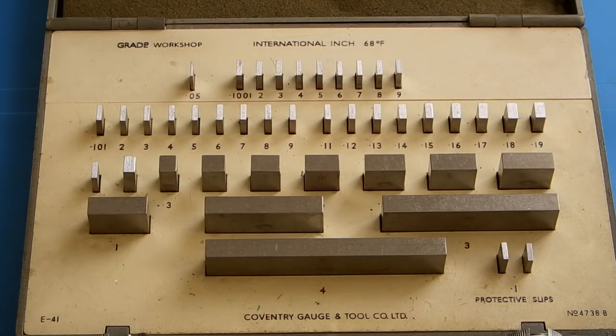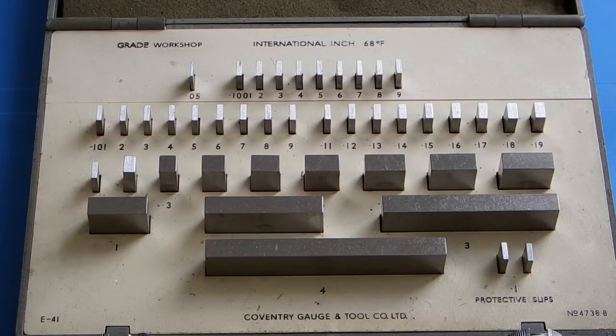These are gauge blocks or slip gauges or Joey blocks or Johansson blocks. The name doesn't really matter that much. They were first made by Carl Johansson who invented this gauge block set and patented it on the 2nd of May 1901 in Sweden.